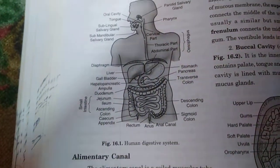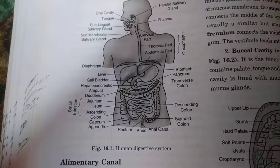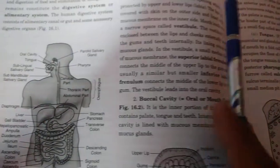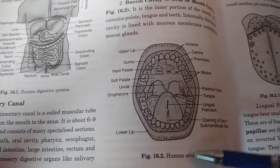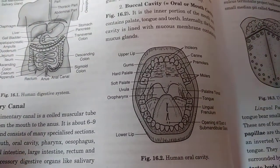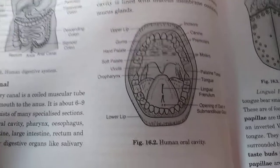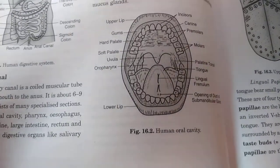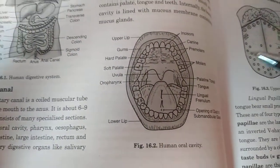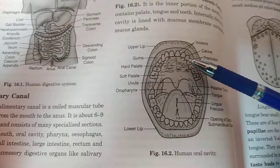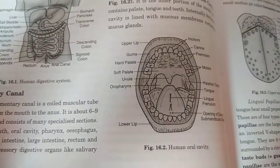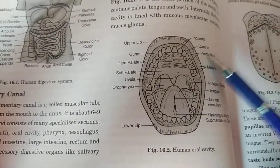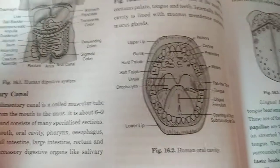Digestion starts from the mouth. In the oral cavity, we have the teeth. There are four types of teeth present in the human mouth: incisors, canines, premolars, and molars.